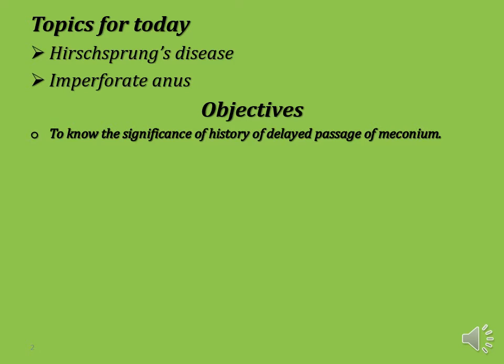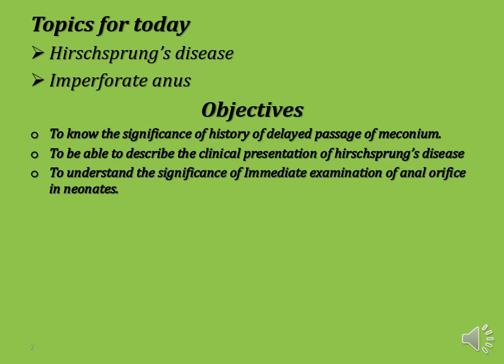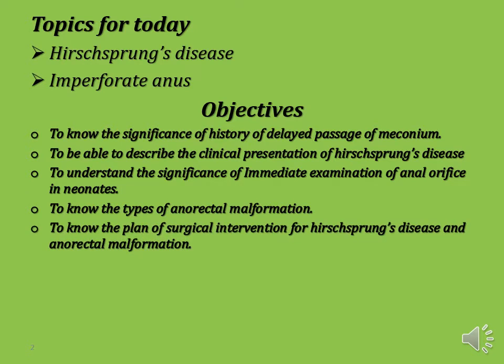At the end of this lecture, you have to know the significance of history of delayed passage of meconium, be able to describe the clinical presentation of Hirschsprung disease, understand the significance of immediate examination of the anal orifice in neonates, know the types of anorectal malformation, and know the plan of surgical intervention for Hirschsprung disease and anorectal malformation.